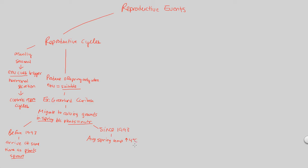Since 1993, the average spring temperature has increased nearly 4 degrees Celsius every year. This means plants sprout earlier, because their sprouting is directly tied to temperature. The problem is that caribou migration to the calving grounds does not sense temperature — the environmental cue for their reproduction is not temperature. Their migration trigger is day length.